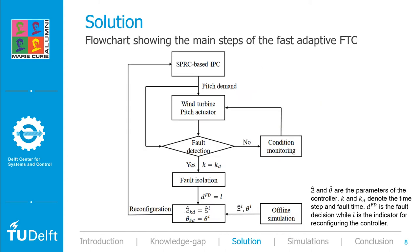The IPC is used to compute the reference control input based on the measured blade-root bending moments. The main steps have been presented in this slide. In the nominal healthy condition, the SPRC-based IPC is used to control the blade pitch of the wind turbine. When a fault happens, the fault-diagnosis system is used to quickly detect and isolate the failed pitch actuator. Based on the fault detection and isolation results, a pre-tuned adaptive SPRC is switched online in place of the existing one, whose initial parameter values have been tuned offline to match the specific detected faulty case.